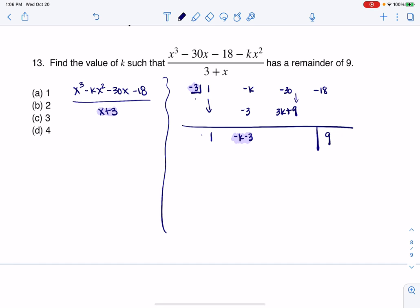And then I'm going to add negative 30 to that. So this would then be 3k minus 21. And now I want to do negative 3 times 3k minus 21. So if I play that out, that's going to give me negative 9k plus 63.